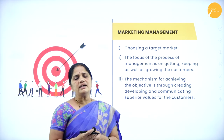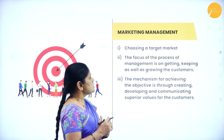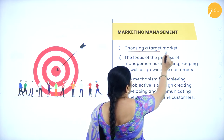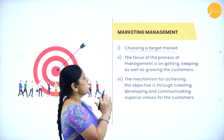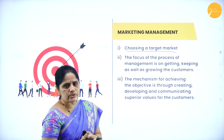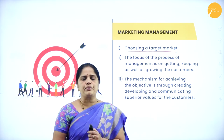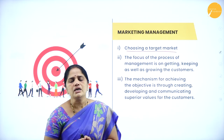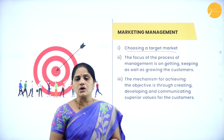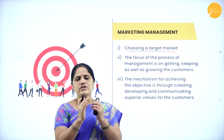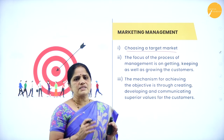Let us look into the various steps involved in marketing management. The first step is choosing a target market — depending on the type of business activity, we have to choose the target market based on the type of product being manufactured. For example, if a company manufactures two-wheelers, the target market will be office-goers or college-going students. We have to choose who our target market is and collect feedback from that market.